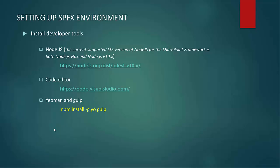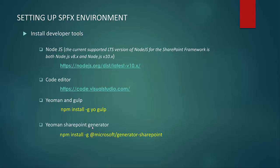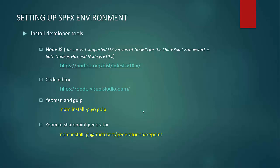Next in line is Yeoman and Gulp. We are going to install Yeoman and Gulp using the command prompt. As mentioned, when we installed NodeJS, the NPM package manager was also installed. Using NPM from the command line prompt, we will be installing Yeoman and Gulp. Last is the Yeoman SharePoint generator, which we will be installing using a command line. These are the toolchain components we have to install to set up a SharePoint framework development environment.